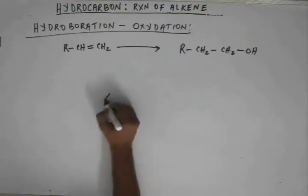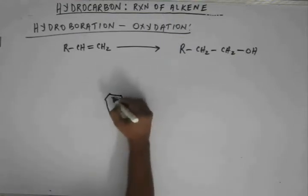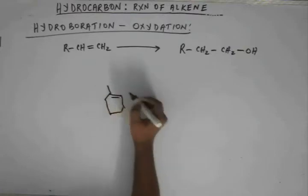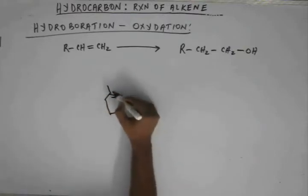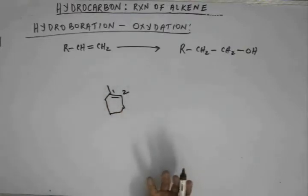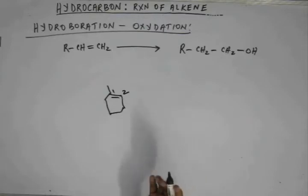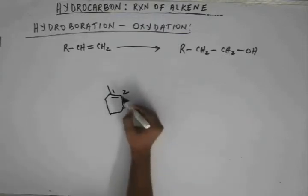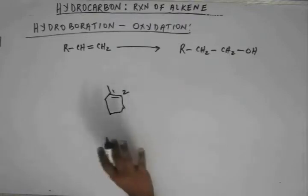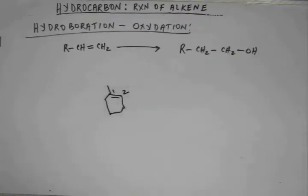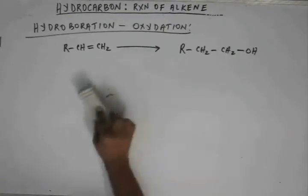If we have a different kind of structure, consider this structure: these two carbons — carbon 1 and carbon 2 — are making a pi bond. In this case, the OH will get attached to C2 because C2 is less substituted, and there would be no rearrangement in this case as well. When we see the mechanism, it will be clear why there shouldn't be any rearrangement.